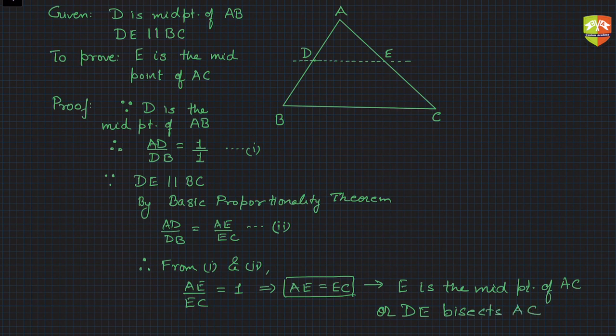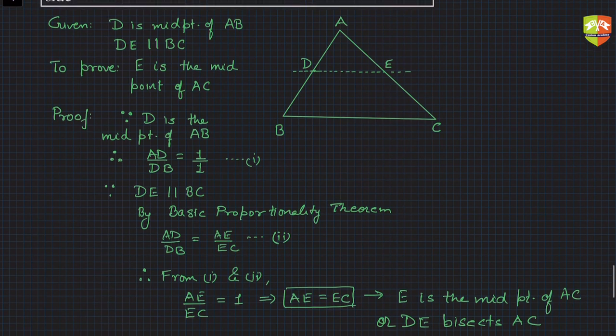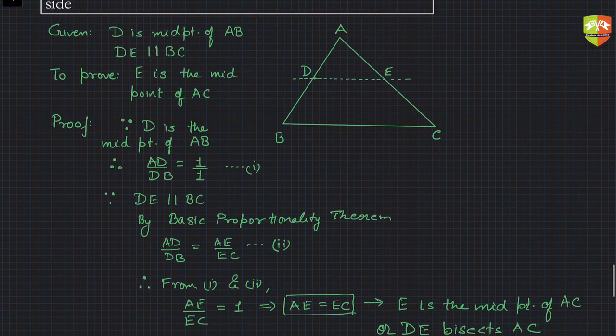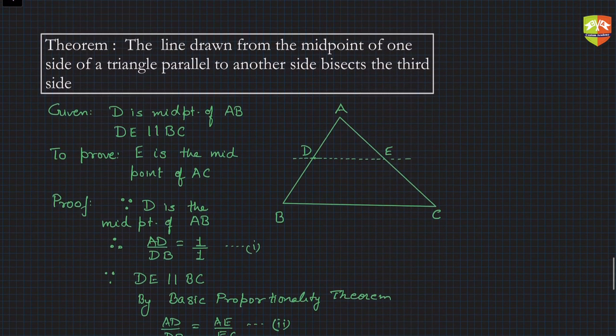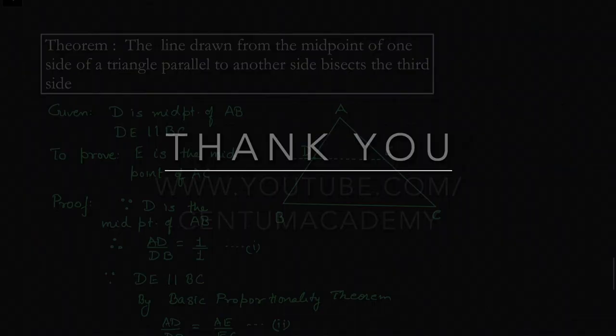This is how, using the Basic Proportionality Theorem, we prove that if a line starts from the midpoint of one side of a triangle and is parallel to the third side, then it will bisect the opposite side as well. Remember this theorem.